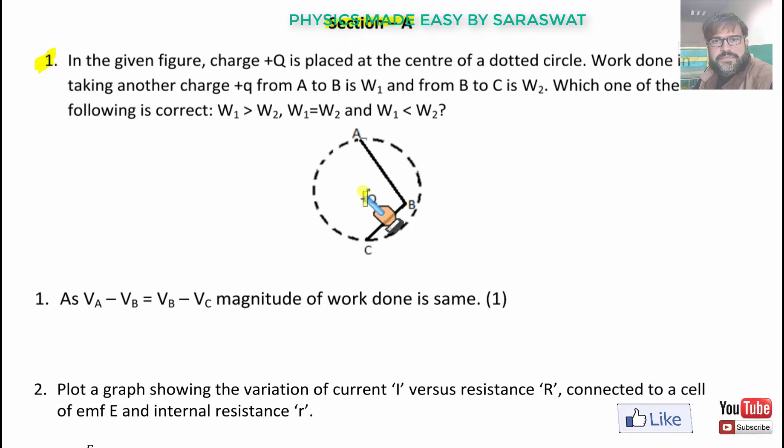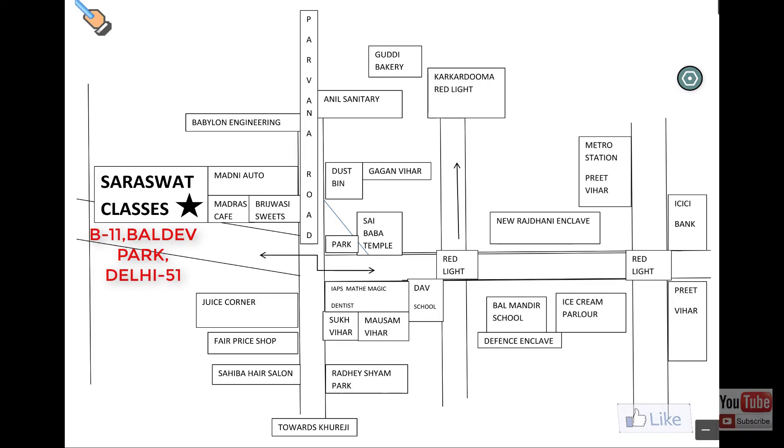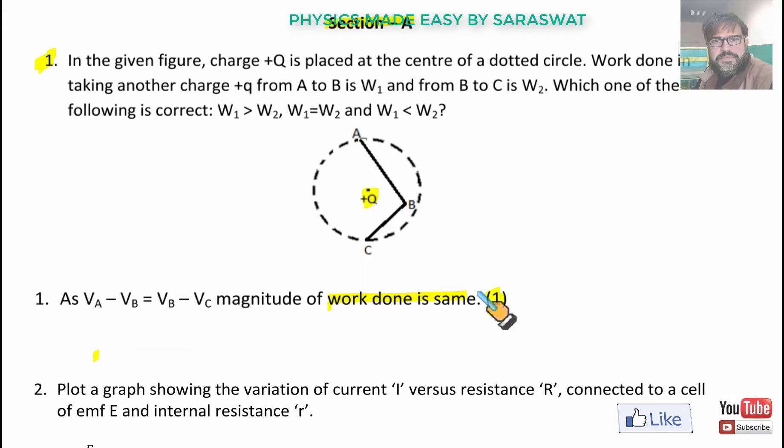In the given figure, charge +Q is placed at the center of the dotted circle. Work done in taking a charge +q from A to B is W₁ and from B to C is W₂. Which one of the following is correct: W₁ > W₂, W₁ = W₂ or W₁ < W₂. The answer is as Vₐ - Vᵦ is equal to Vᵦ - Vᴄ, magnitude of work done is the same.